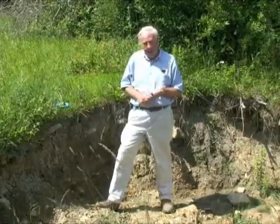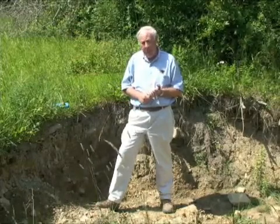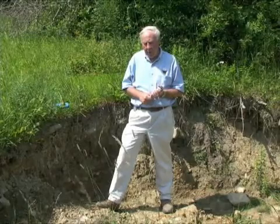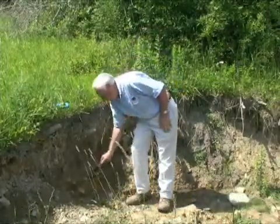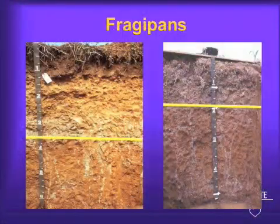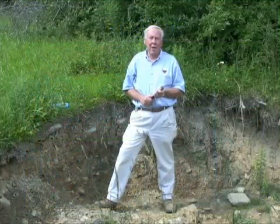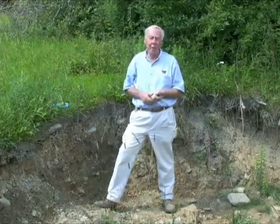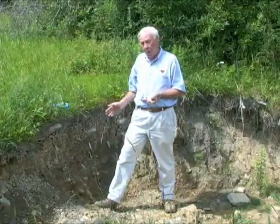The soil that develops here is called Andover. This Andover soil has what we call a fragepan, which is a very dense, impermeable layer approximately two feet from the soil surface. Many of our colluvial soils have these fragepans, which perch or hold water above them, making this soil actually fairly wet.